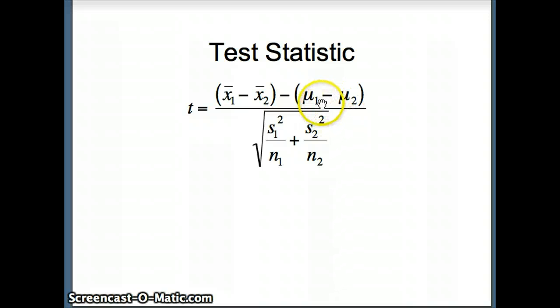The only difference is μ₁ minus μ₂ is just about always going to be 0, because we're going to compare whether the first mean is larger than the second mean, whether the first mean is smaller than the second mean, or whether the first mean doesn't equal the second mean. And in each case, H₀ would be μ₁ equals μ₂, or μ₁ minus μ₂ would be 0.